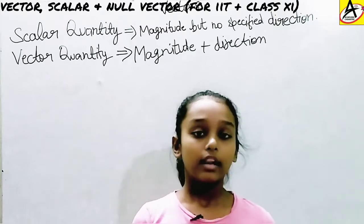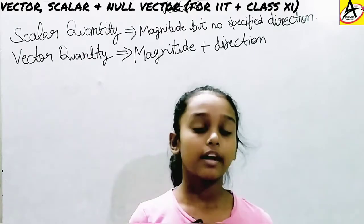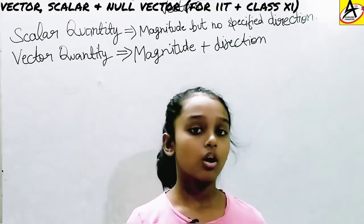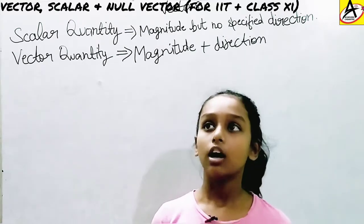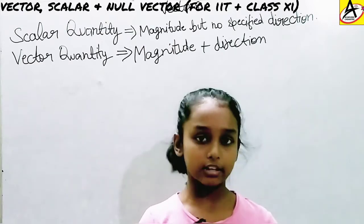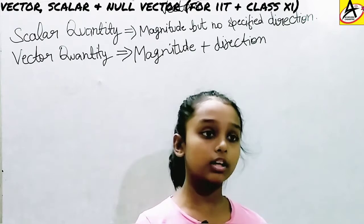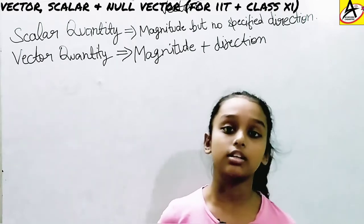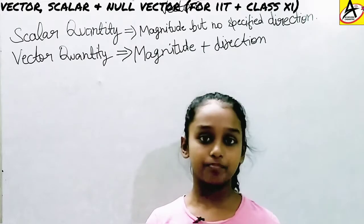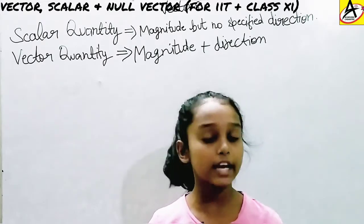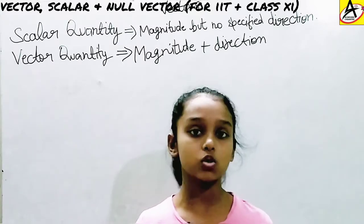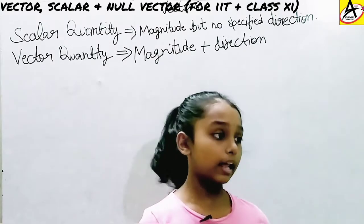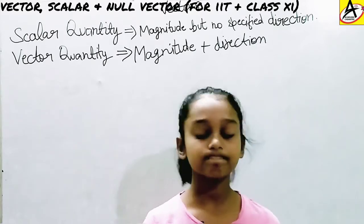These are the two physical quantities: scalar and vector. Now I'm going to tell you some examples of vectors in nature: velocity, momentum, force, and more. Velocity is speed with direction. Momentum is a vector quantity which is the product of mass and velocity of an object. Force is simply a push or pull upon an object. Other examples include electromagnetic fields and acceleration.